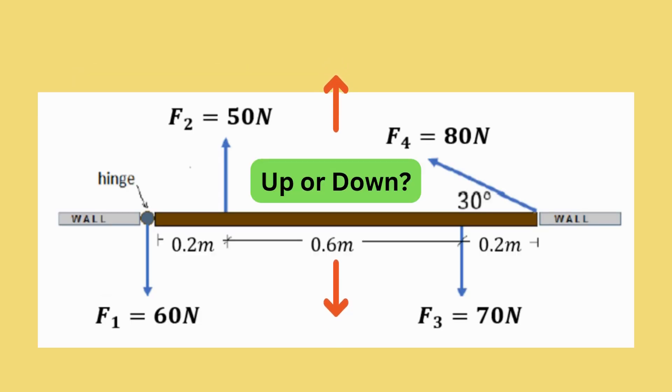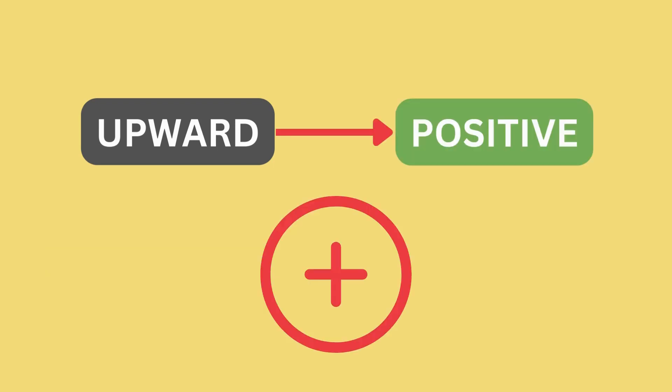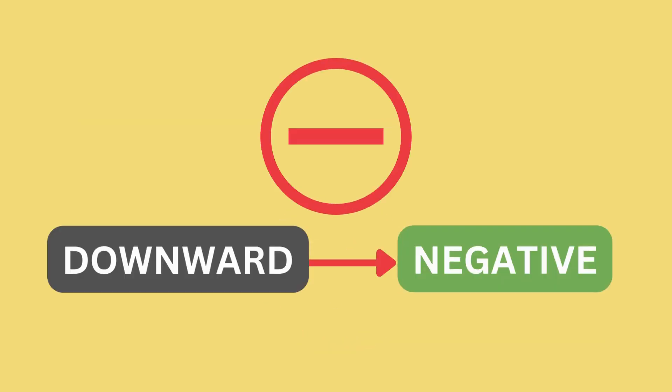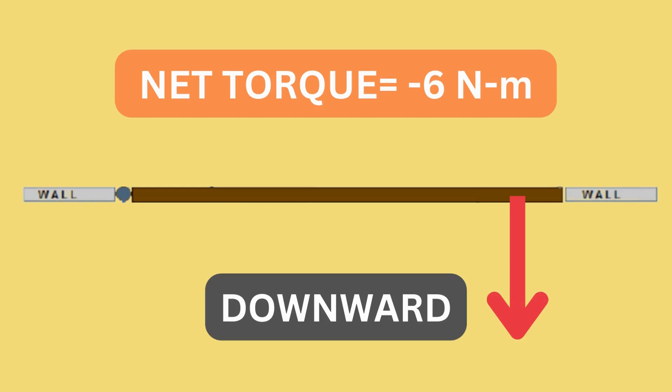From this, we'll also be able to answer question letter B, which asks whether the door will open upward or downward. If you can remember, earlier we assigned all forces going upward with a positive sign and the forces going downward with a negative sign. Since the value of the net torque is negative, the forces acting on the door will give the door a net torque of negative 6 newton meters and will open downwards.